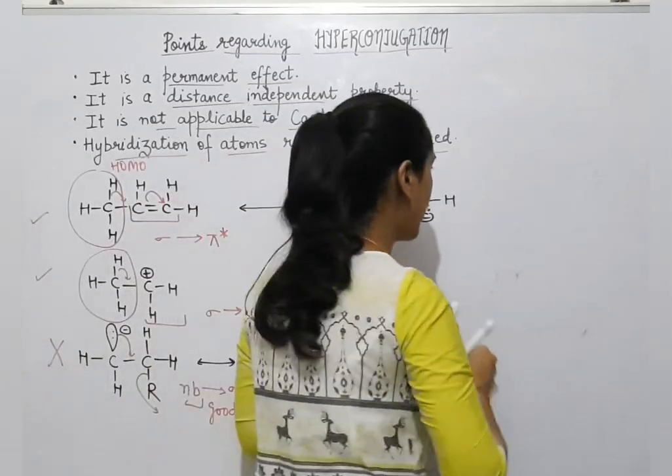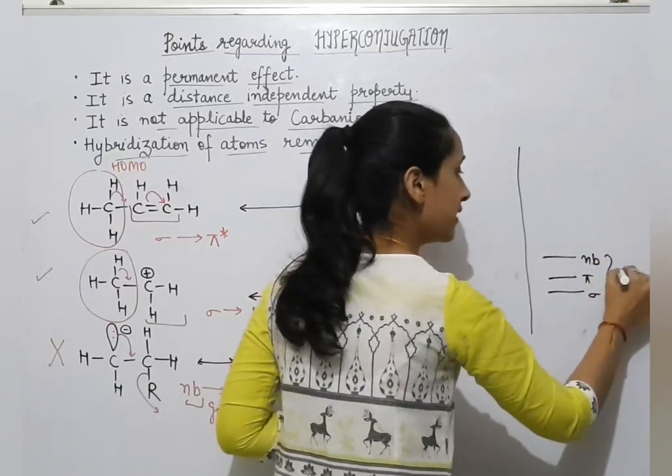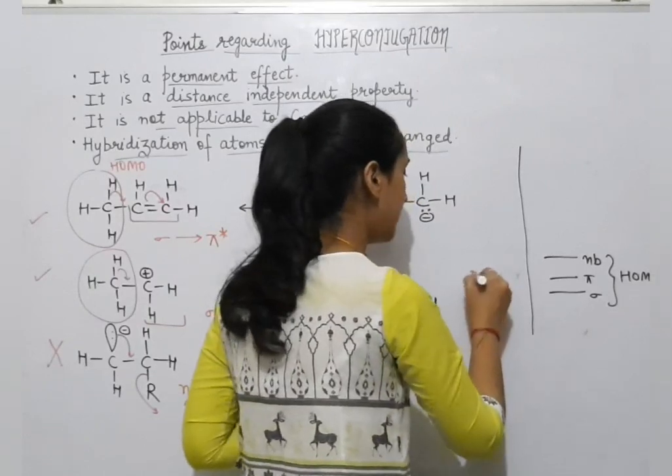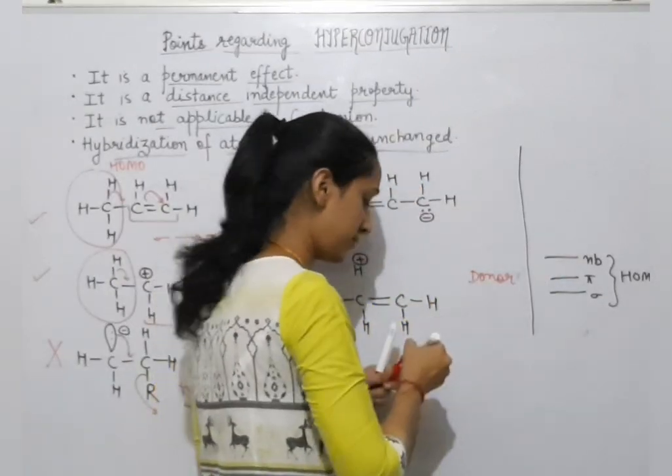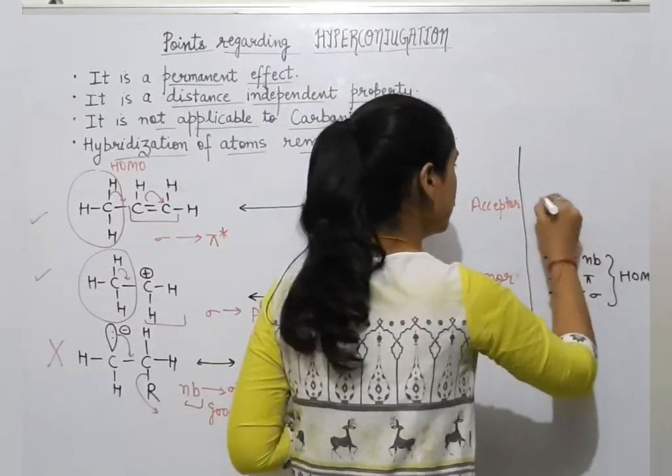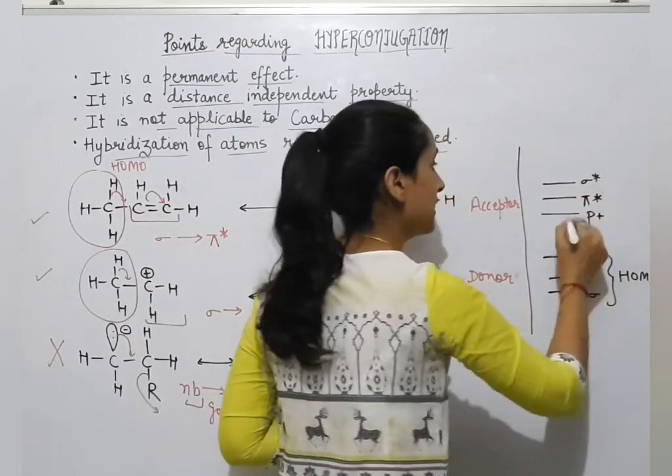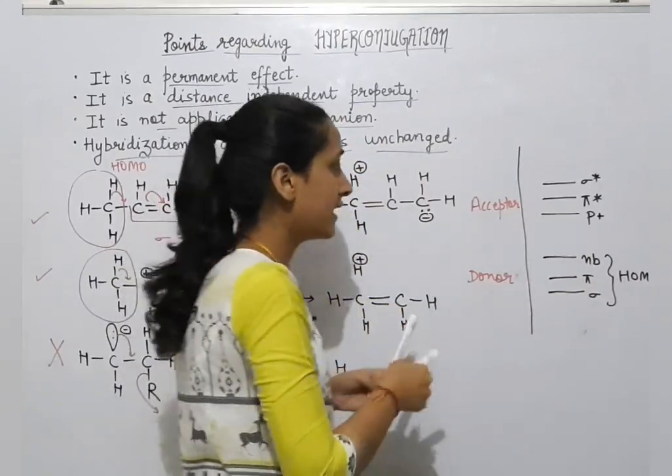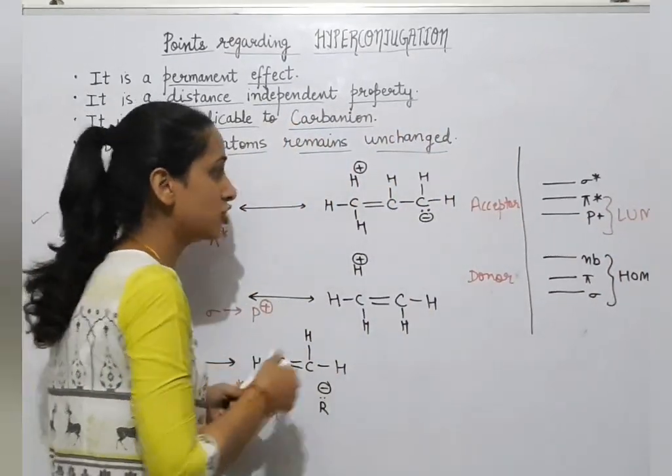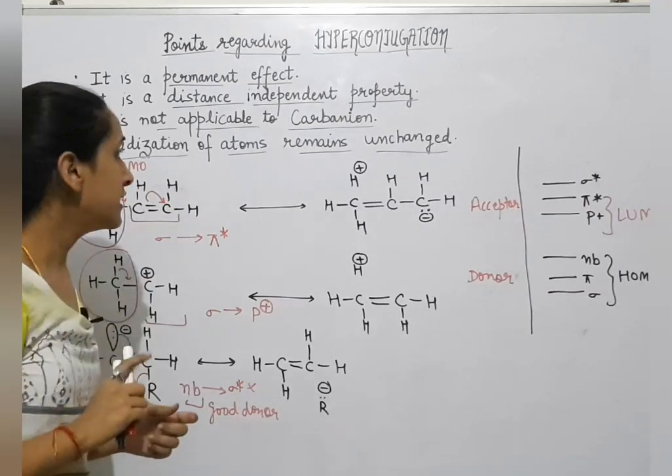If you have to tell me, sigma, non-bonding, this is HOMO. Higher the energy of HOMO, better the donating capability. This is donor ability. Non-bonding donating ability is maximum. But if we talk about acceptor, the p plus, pi star, sigma star, this is the order. Lower the energy of LUMO, better the acceptor ability. P plus acceptor ability is more than carbon ion hyperconjugation.